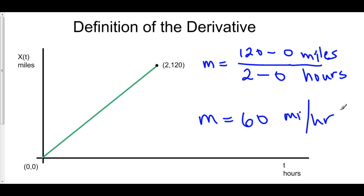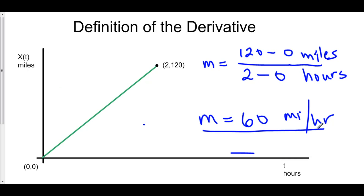This leads to a very significant idea: if you find the slope of a function — here we found two points — the slope between these two points on position gave us the rate of change of position, miles per hour. In terms of physics, the rate of change of position is velocity. We're looking at a straight line here, and we know how to find the slope of a straight line. If we have constant velocity — because my velocity here is 60 everywhere — a straight line has constant slope.